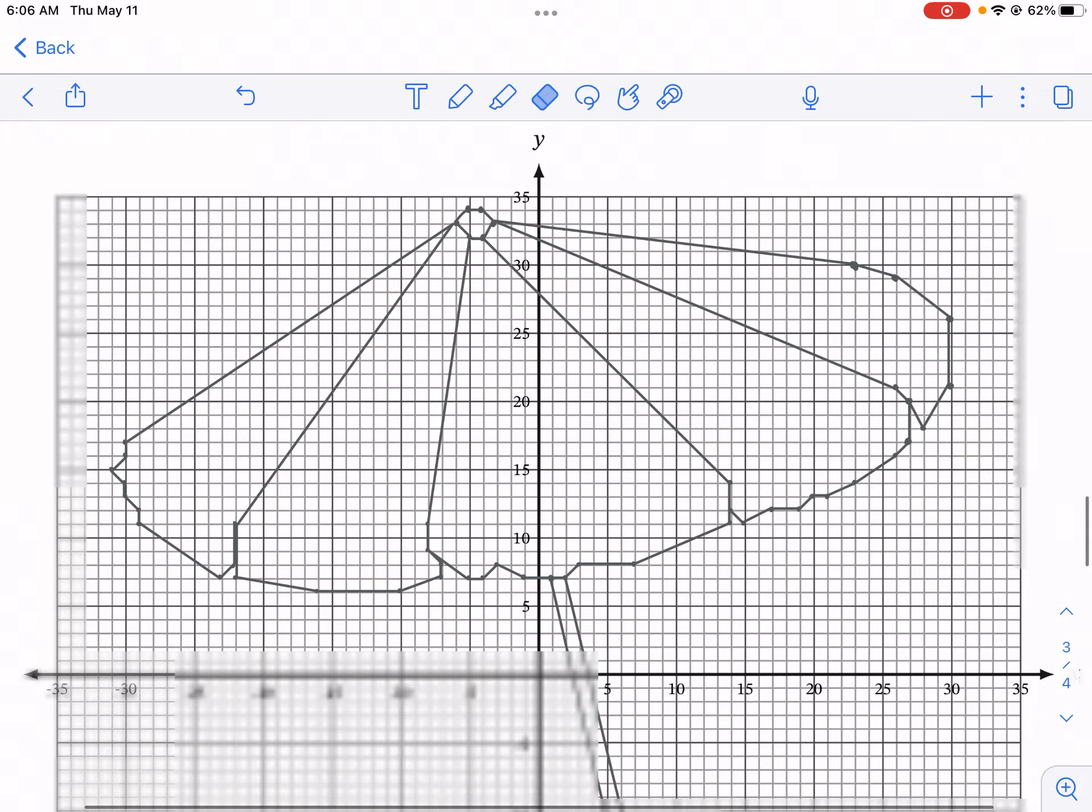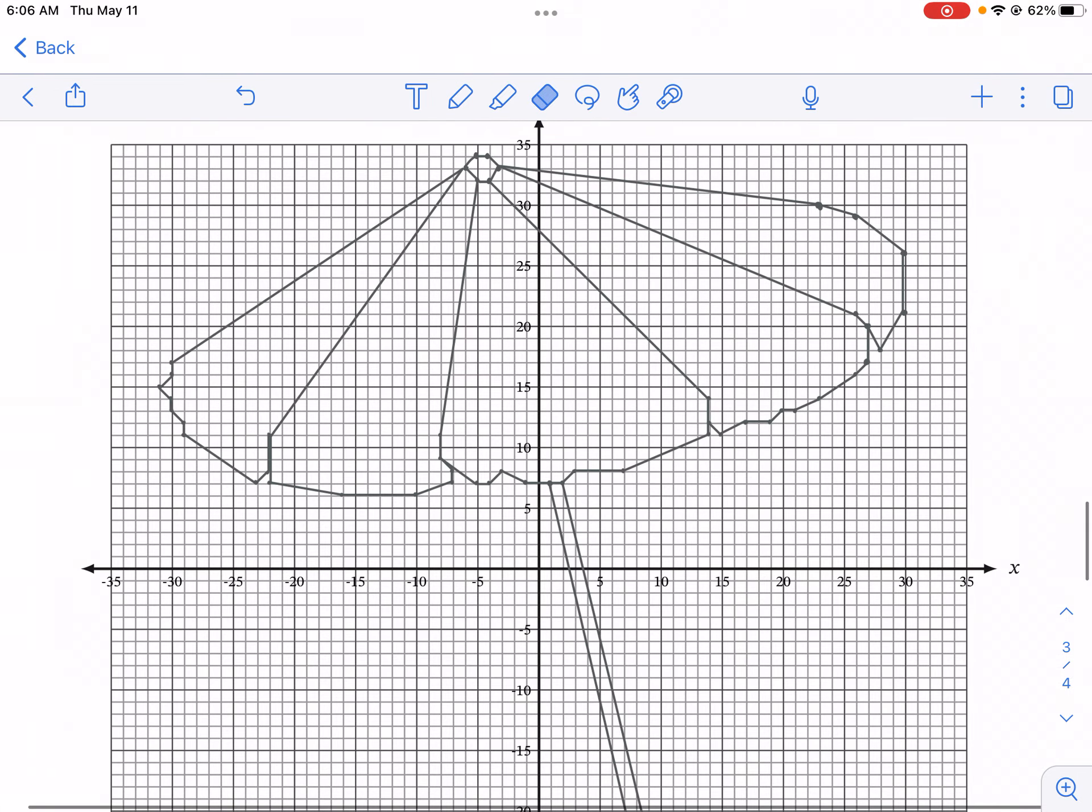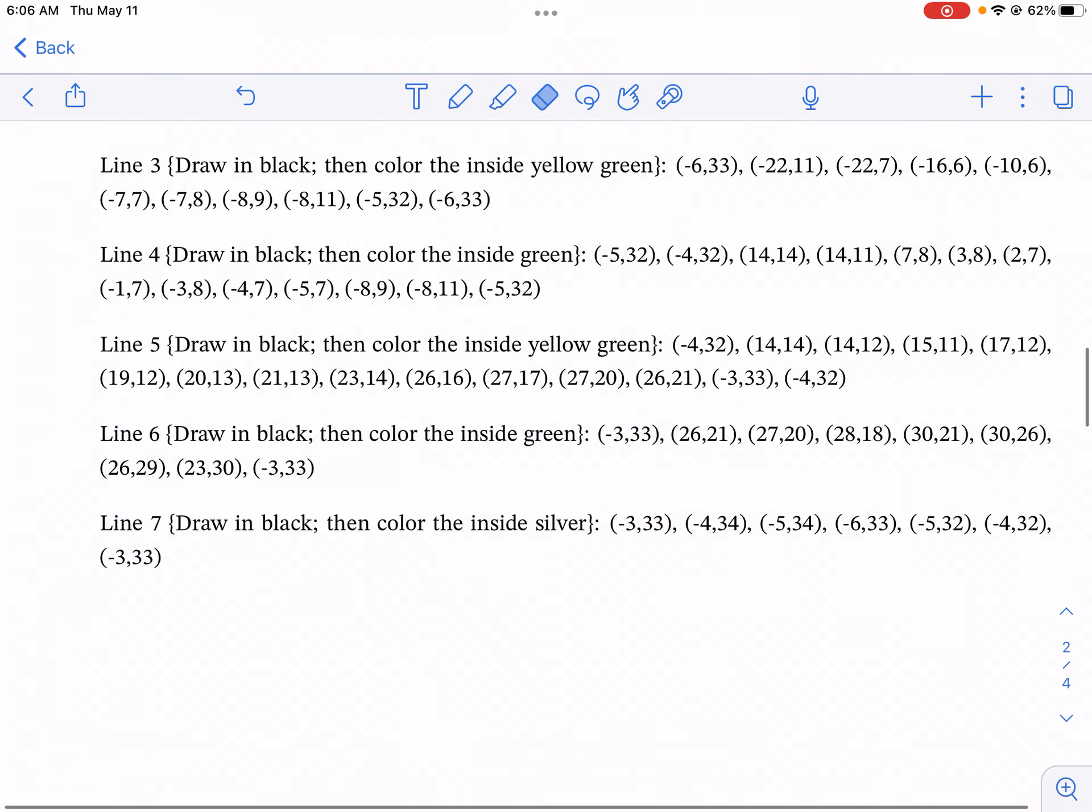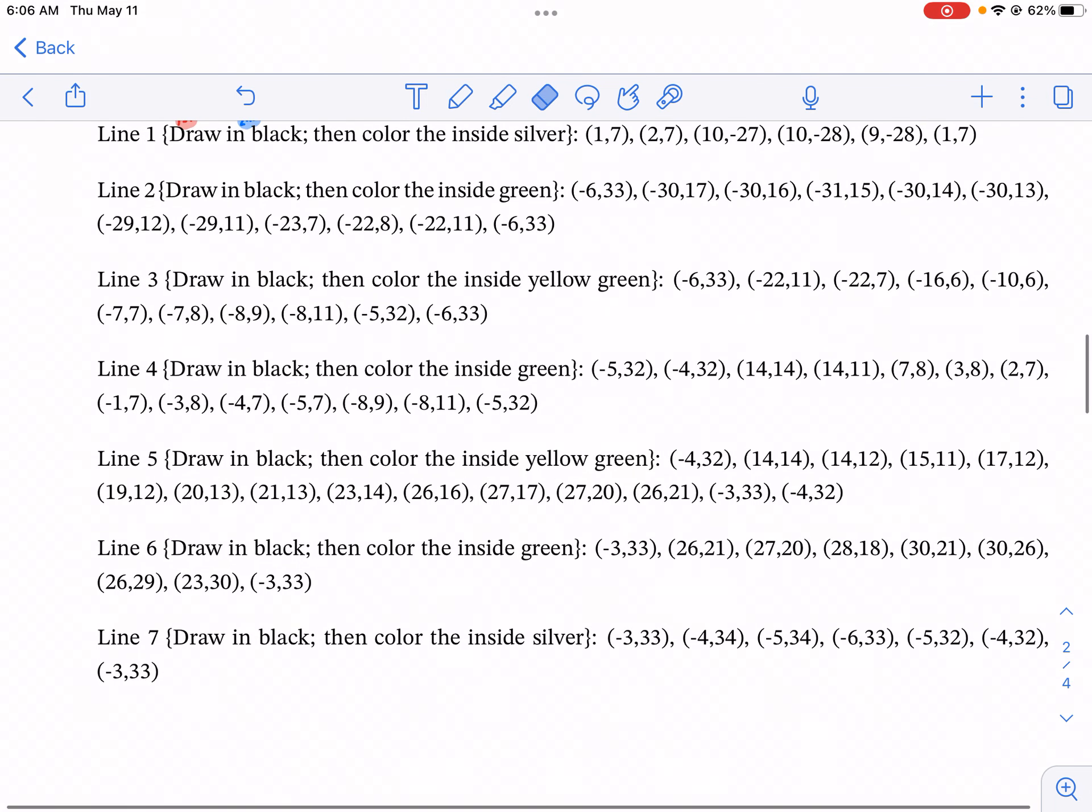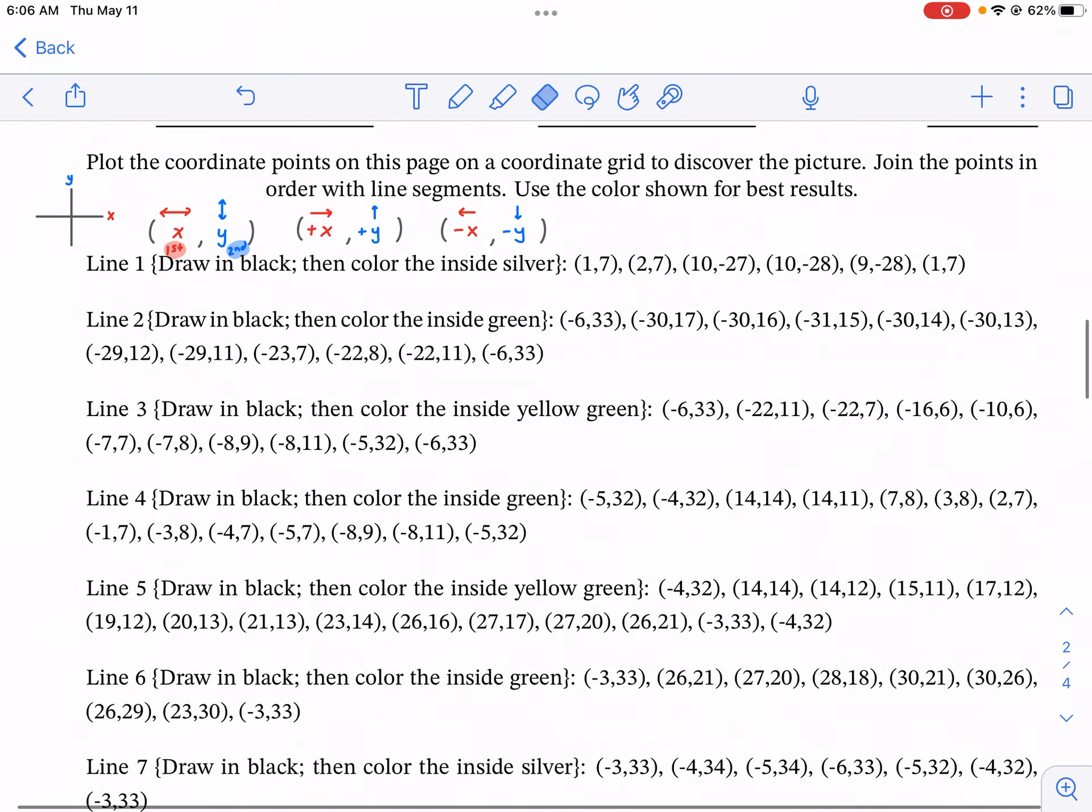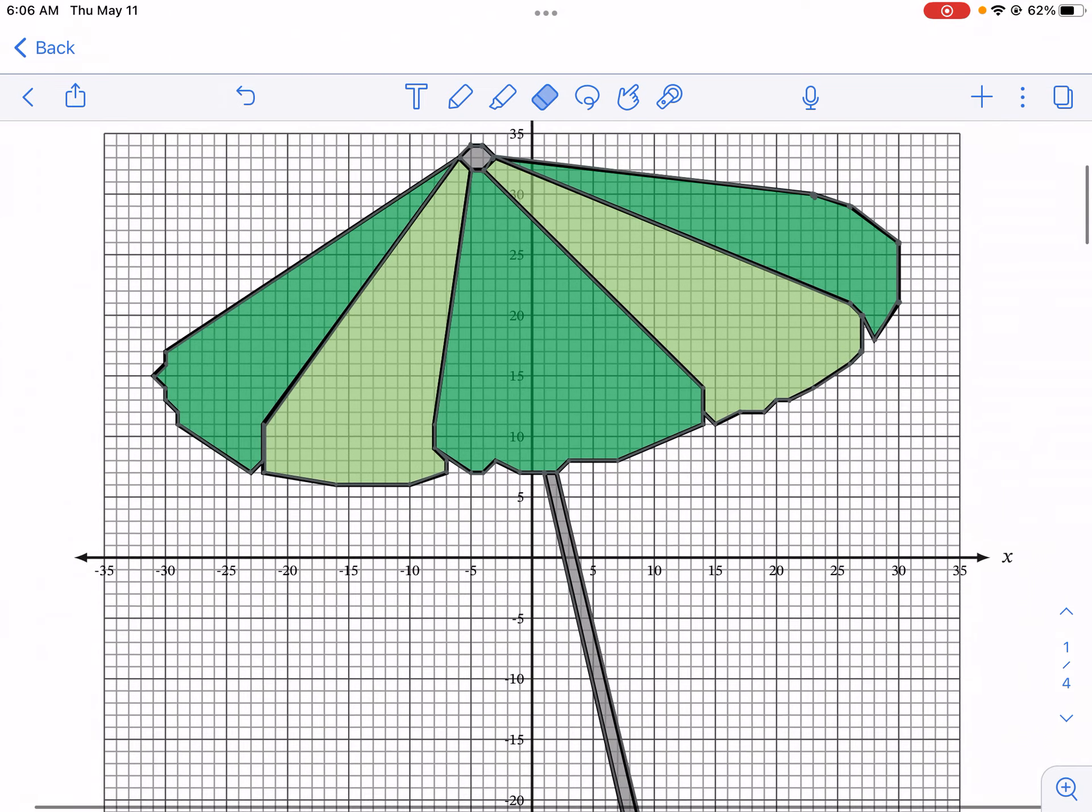So there you have it. We have our umbrella completed. When you're done, I would recommend coloring it in. The math drill suggestions are really good for this one. We have different colors that it has for each one of the different umbrella pieces—green, yellow green. So the finished product could look something like this.